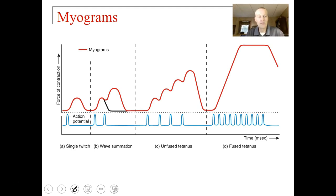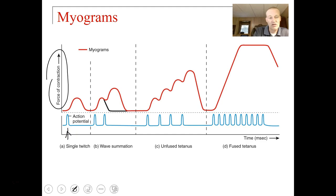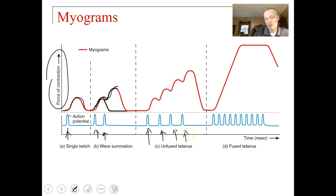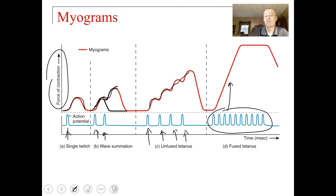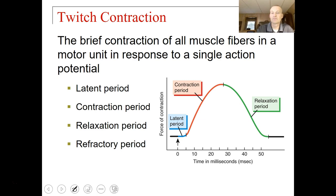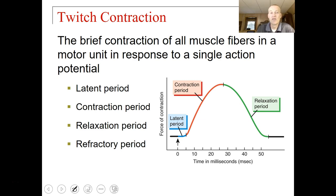Switching gears: we can look at the force of contraction versus action potentials. As an action potential comes to a muscle cell, you get a contraction. The more frequent the action potentials, the more forceful the contraction. The more signals sent from the brain to the muscle cell, the more forceful the contraction will get — and eventually you can overwhelm the muscle. These are called myograms. The brief contraction of all muscle fibers in a motor unit in response to a single action potential is a twitch.